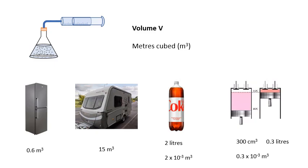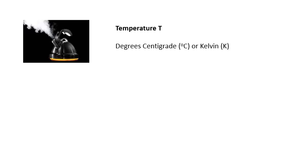It gets trickier if you're given the volume in centimeters cubed. For example, 300 centimeters cubed — that's 0.3 liters, because there are 1,000 centimeters cubed in a liter. So 0.3 liters is 0.3 times 10 to the minus 3 meters cubed. If a question gives you 300 centimeters cubed, in the equation you use 0.3 times 10 to the minus 3 meters cubed.